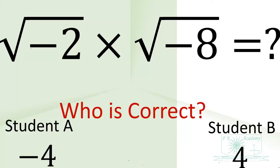What is the product of square root of negative 2 and square root of negative 8? Two students answered that question. Student A said the answer is negative 4. Student B said the answer is 4. Who is correct? What went wrong? We'll find answers to these questions in this video.